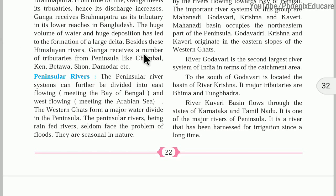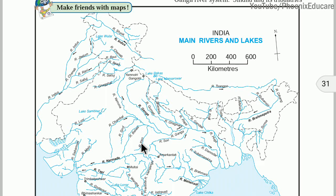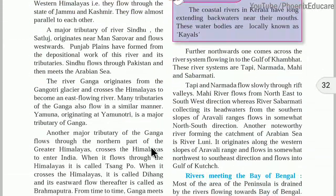These peninsular and central highland rivers — Chambal, Kain, Son, Betwa, Damodar — are meeting the Ganga river and are therefore tributaries of Ganga. Tributaries add water to Ganga. On the other hand, the Hooghly river is a distributary of Ganga, taking water away from it.